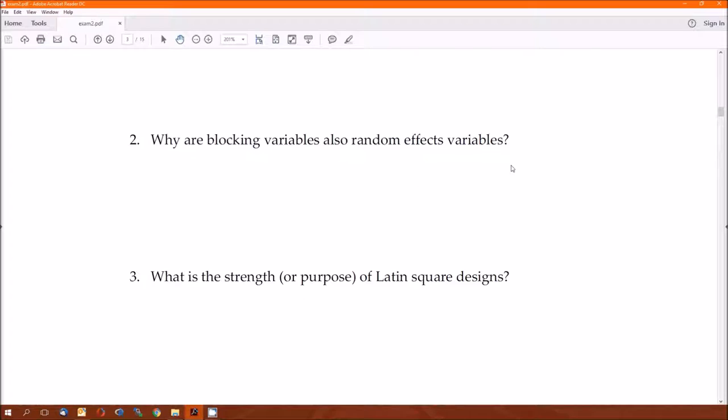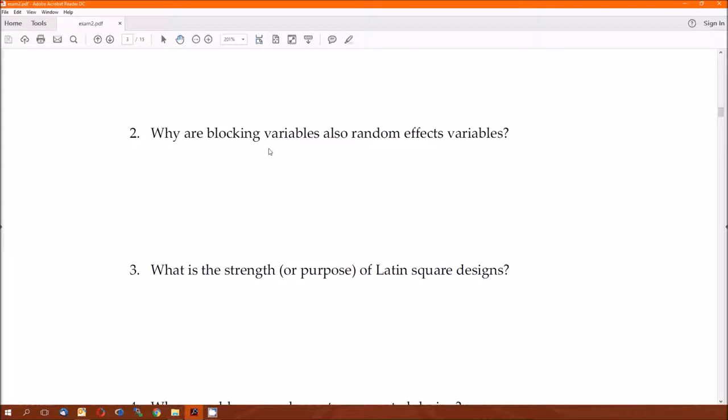Two: blocking variable is also random effects because you're not looking at the actual levels in that variable. You're not comparing the different levels. You're adding a blocking variable to take care of some of that unexplained variation that's found in your experiment. So that's why a blocking variable is a random effect.